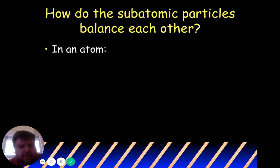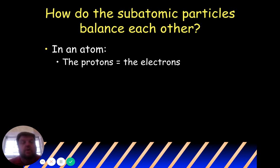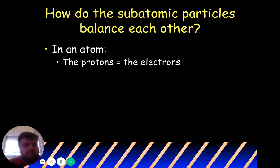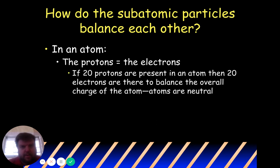So how do they balance each other out? In an atom, the protons and the electrons are equal. If you have five protons, you have five electrons. For this class we're only going to talk about neutrally charged atoms. When you get into chemistry they'll talk about ions and isotopes, but our focus is just neutrally charged atoms — protons and electrons are equal. If there are 20 protons, then there are 20 electrons to balance the overall charge of the atom.